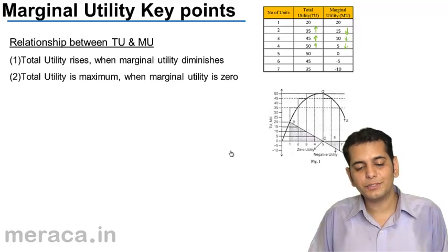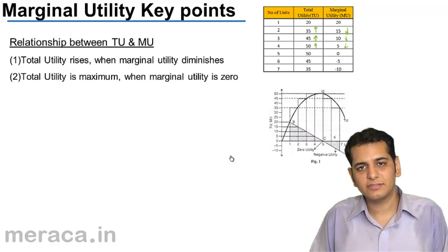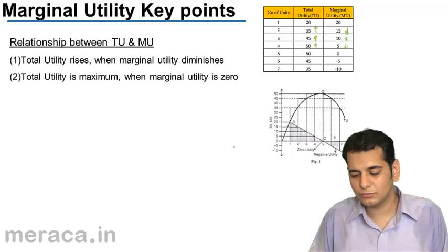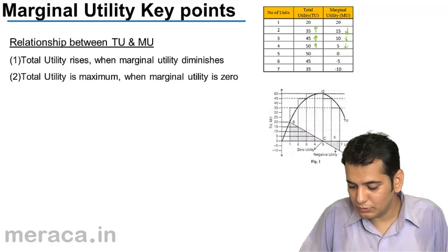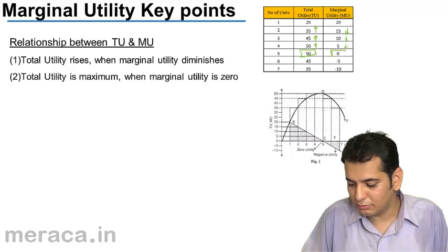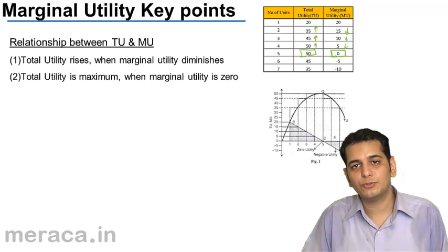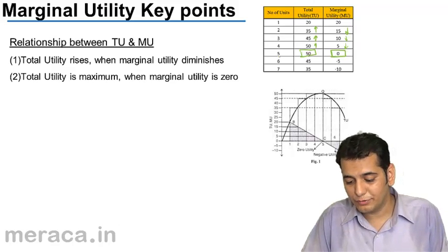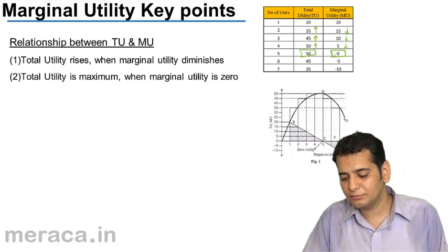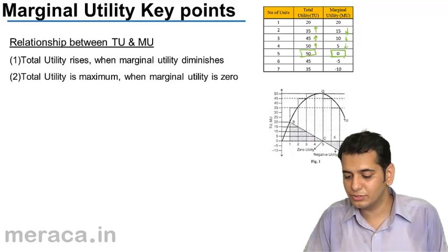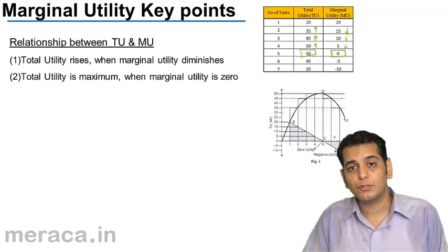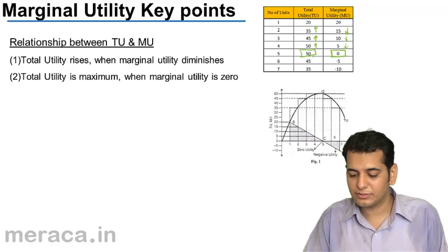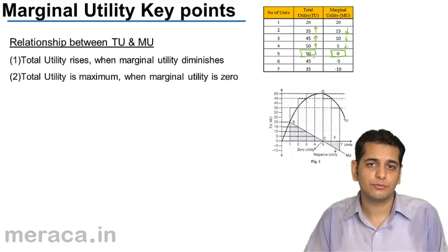Total utility is maximum when the marginal utility is 0. At the fifth unit of consumption, our marginal utility is 0, and there the total utility is at its maximum, that is 50.